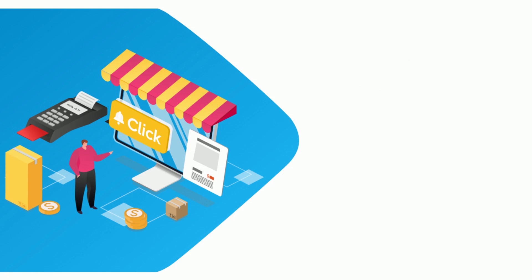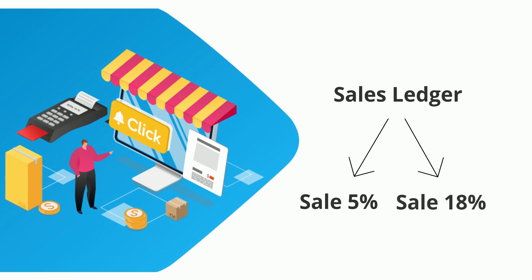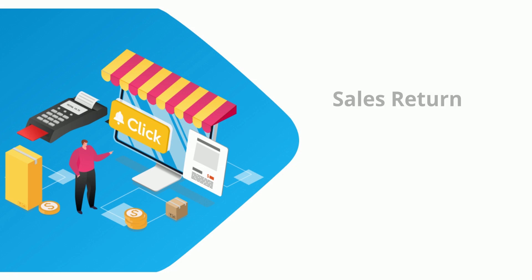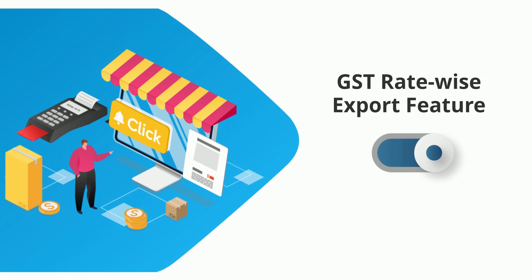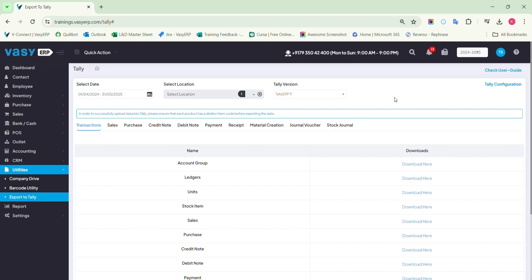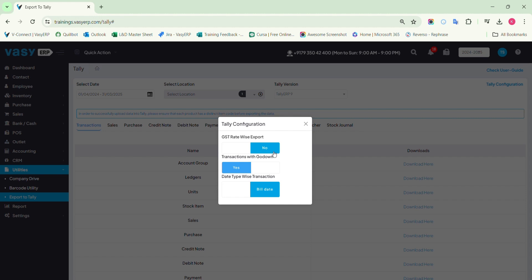Not only that, but the sales ledger will also be bifurcated according to the tax rate, as Sales 5% and Sales 18%. The same impact applies to sales return, purchase, and purchase return when importing the respective data in Tally after enabling the setting. To use this feature, open the ERP and go to the export to Tally feature under Utilities. Click on Tally Configuration and turn on the GST rate-wise export setting.